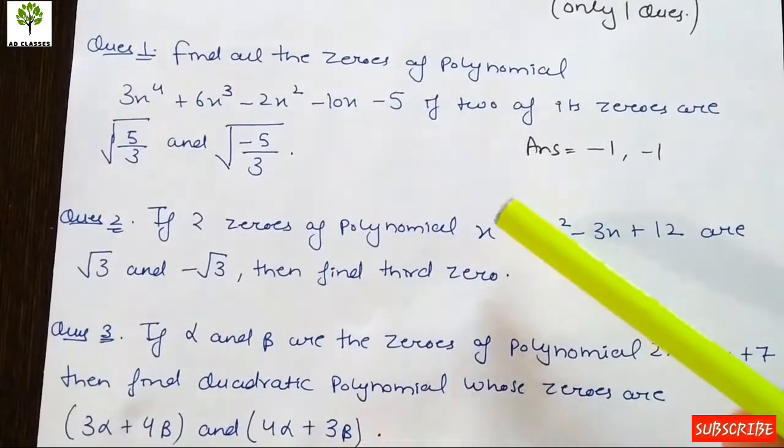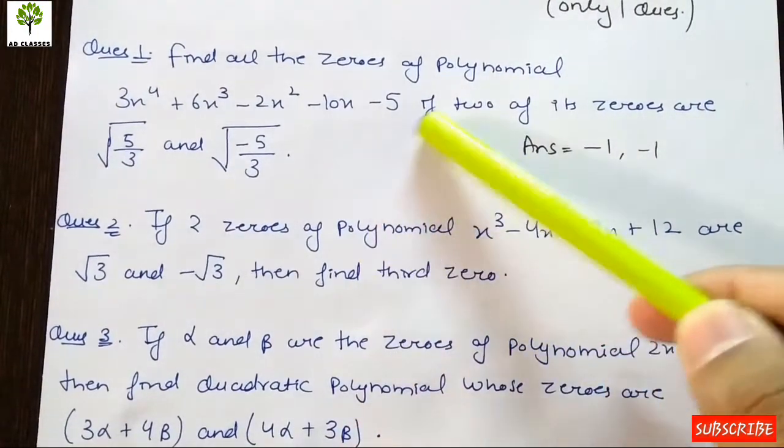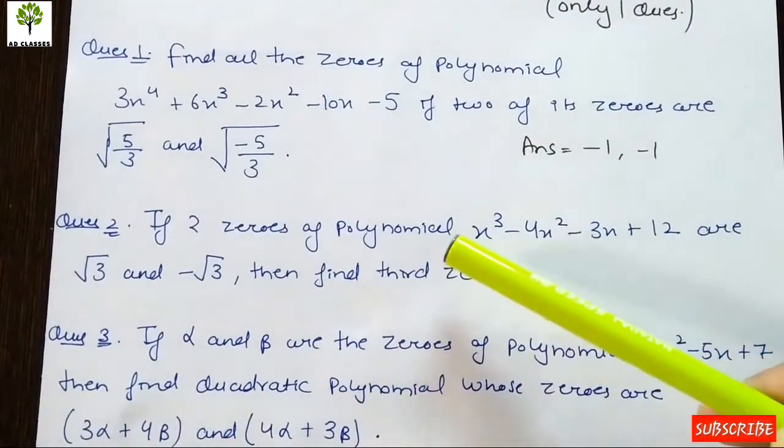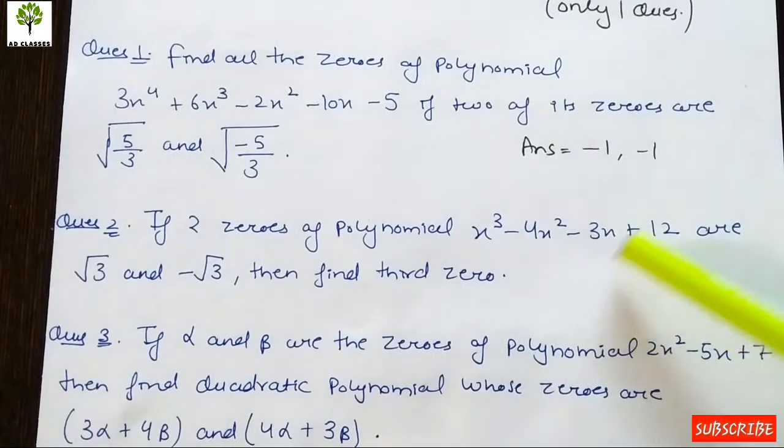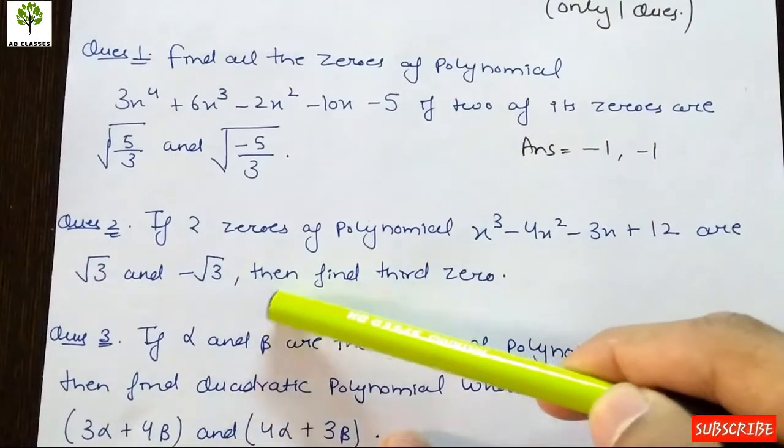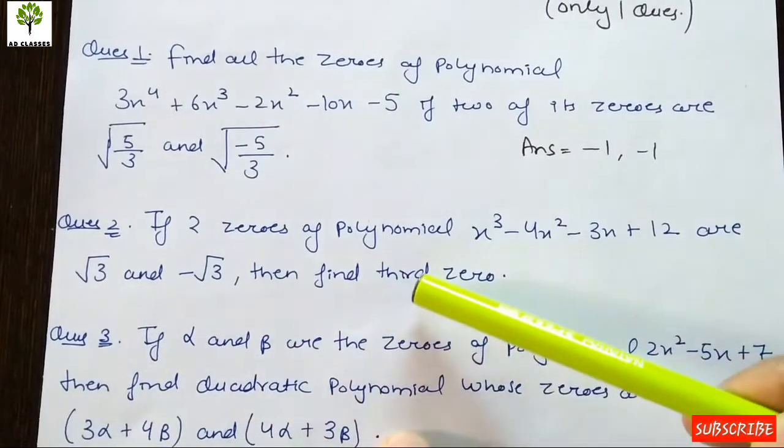Question 2: If two zeros of the polynomial x³ - 4x² - 3x + 12 are √3 and -√3, then find the third zero. This is the same type of question, so this is an important question.